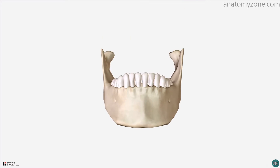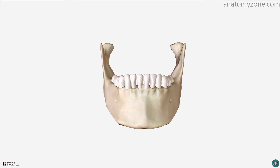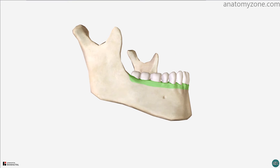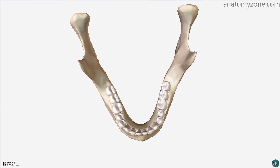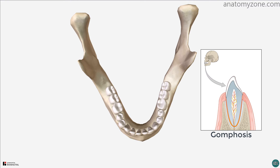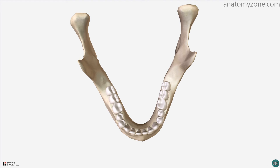I've just removed the other cranial and facial bones to demonstrate the alveolar process of the mandible, which extends superiorly from the mandibular body and houses the teeth. The teeth are contained within a specialised type of fibrous joint known as a gomphosis, which is a joint formed between the root of the tooth and the socket formed in the mandible or maxilla.